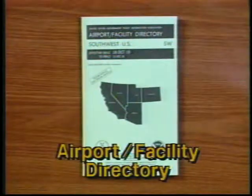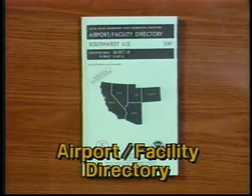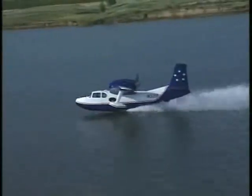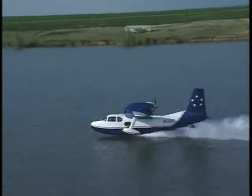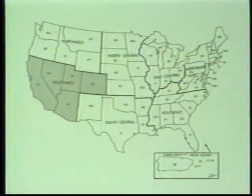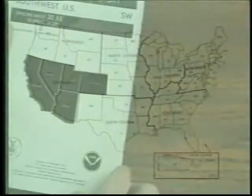Now let's look at the Airport Facility Directory. This publication contains facts about all public use airports, heliports, and seaplane bases. It is published in a number of volumes with each one covering several states in a given region. To help explain the contents, let's look at some typical entries from the Southwest directory. Each volume has a directory legend that helps you interpret the abundance of information. As you gain more experience using the Airport Facility Directory, you'll find the entries easy to read.